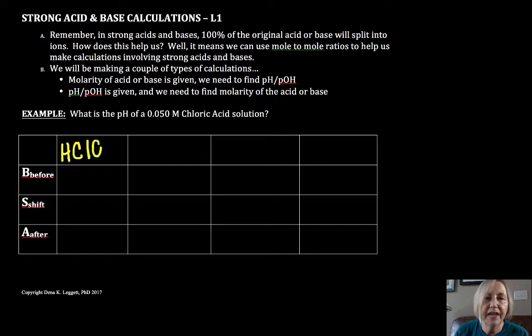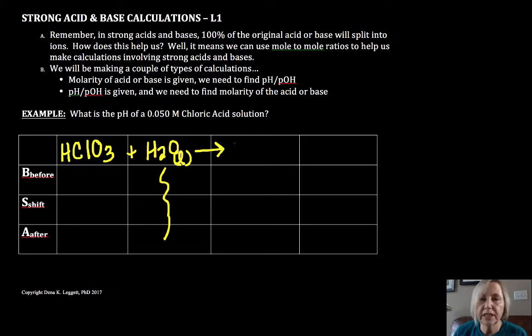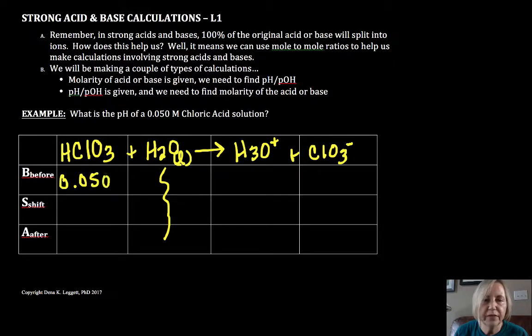In this problem I have HClO3 plus water. I'm going to go ahead and include it but we don't care about water in the calculation because it's the solvent, it's a pure liquid. So I'll get H3O+ plus ClO3-. The question tells us I have a 0.050 molar solution.